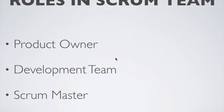Since Scrum also supports a lot of collaboration, the team works collaboratively to come up with solutions and deliver. These are the only three roles in the Scrum team: Product Owner, Development Team, and Scrum Master.